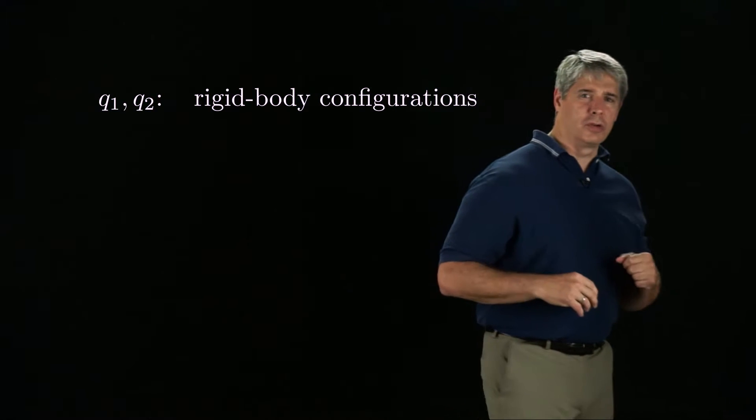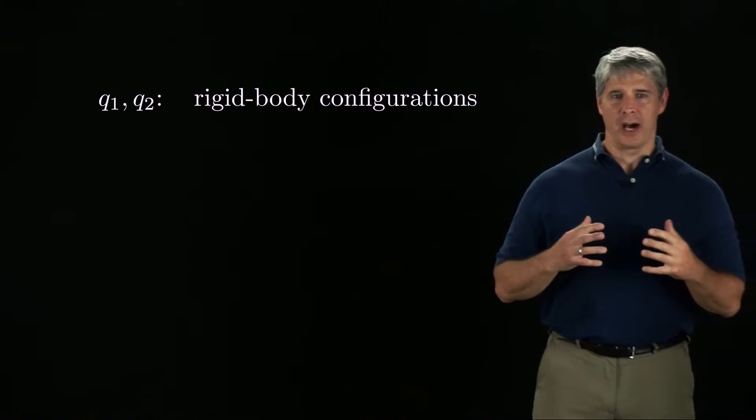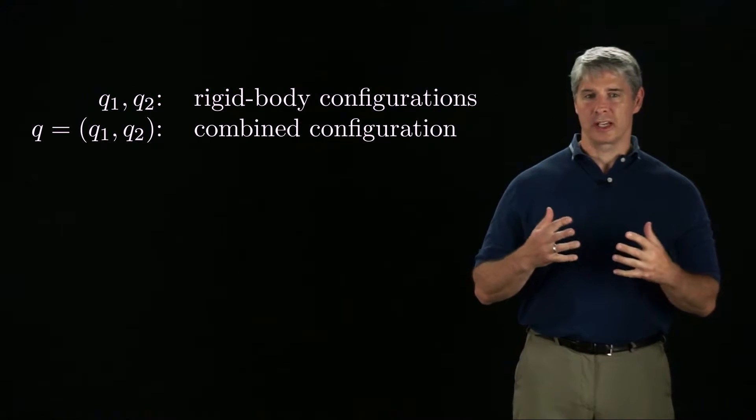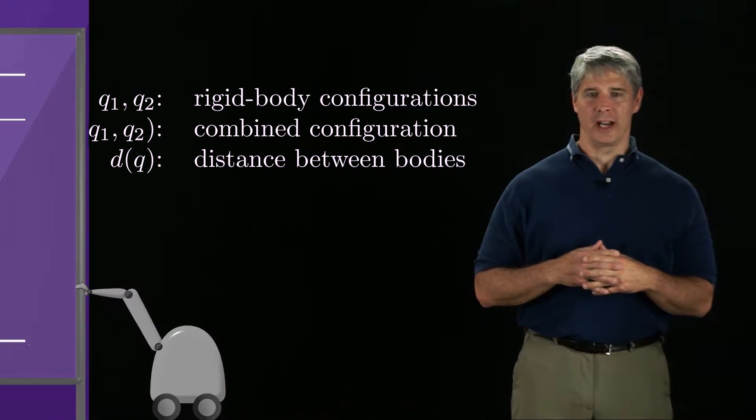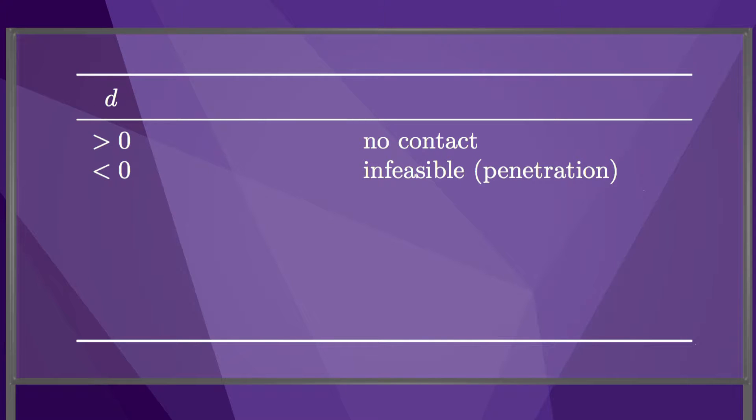Let's say that q1 and q2 are coordinate representations of the rigid body configurations, q is the combined configuration, and d is the distance between the two bodies. We can create a table of possibilities governing whether the two bodies are in contact depending on their trajectories, q1 and q2.